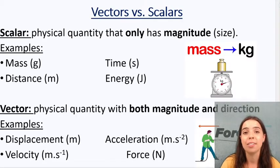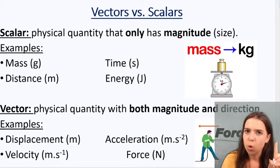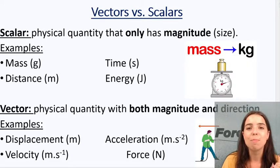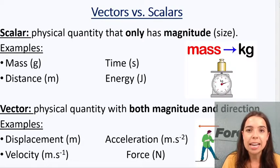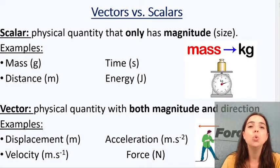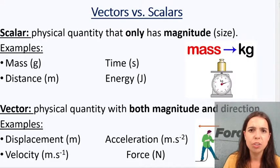Vectors on the other hand are also physical quantities, they also have magnitude, but and this is a big but, vectors need a direction. So for example, if I said I ran 300 meters to the east, I am now giving you a vector, not a scalar.